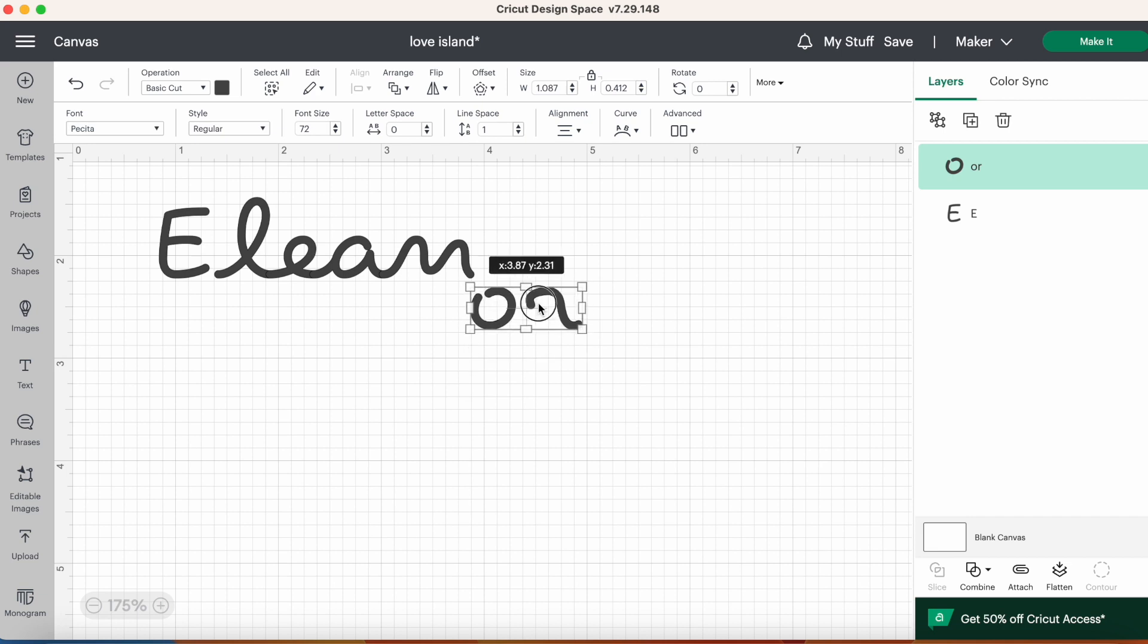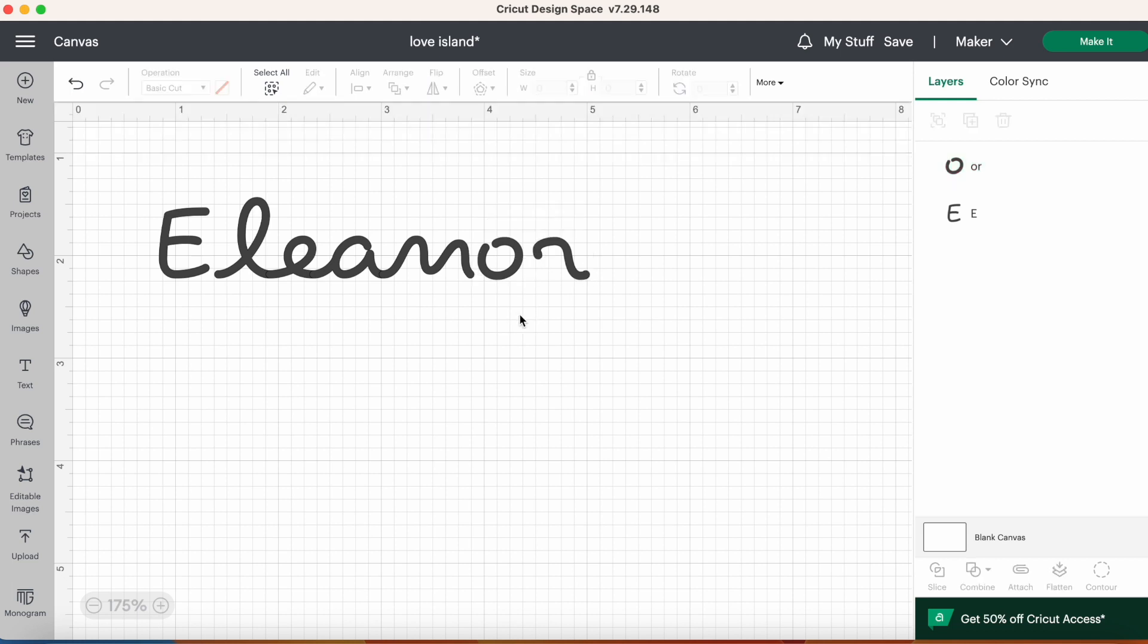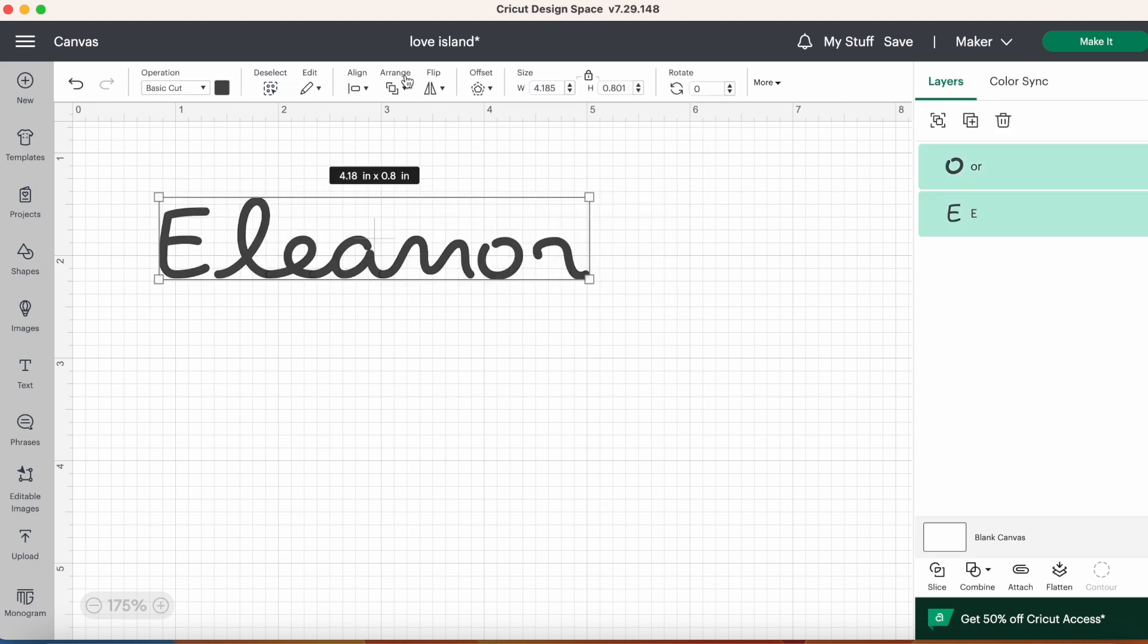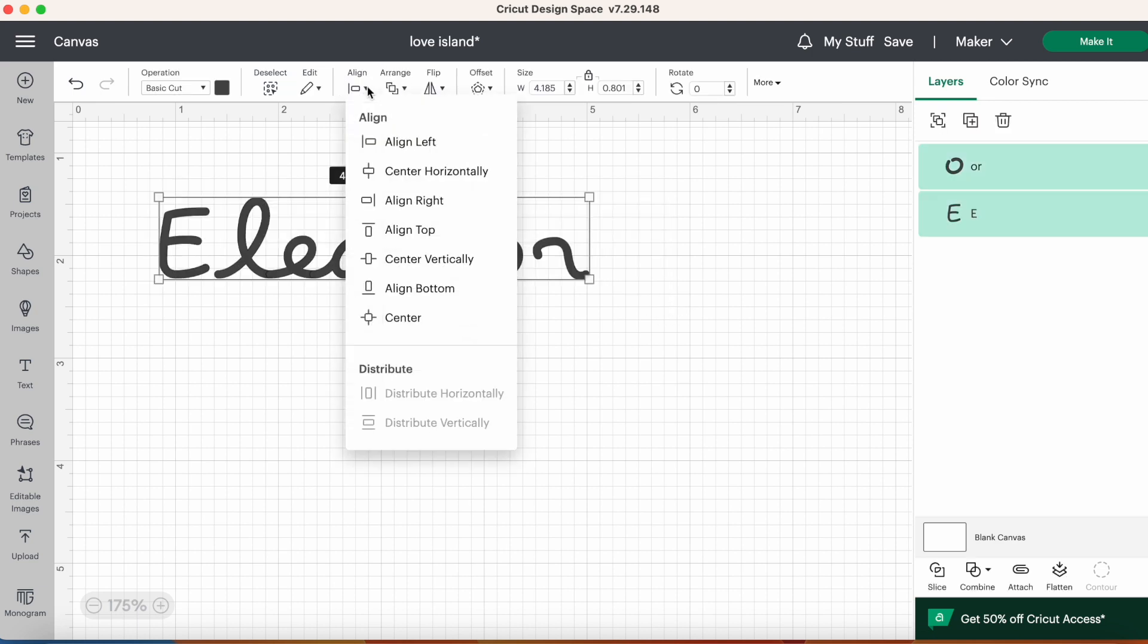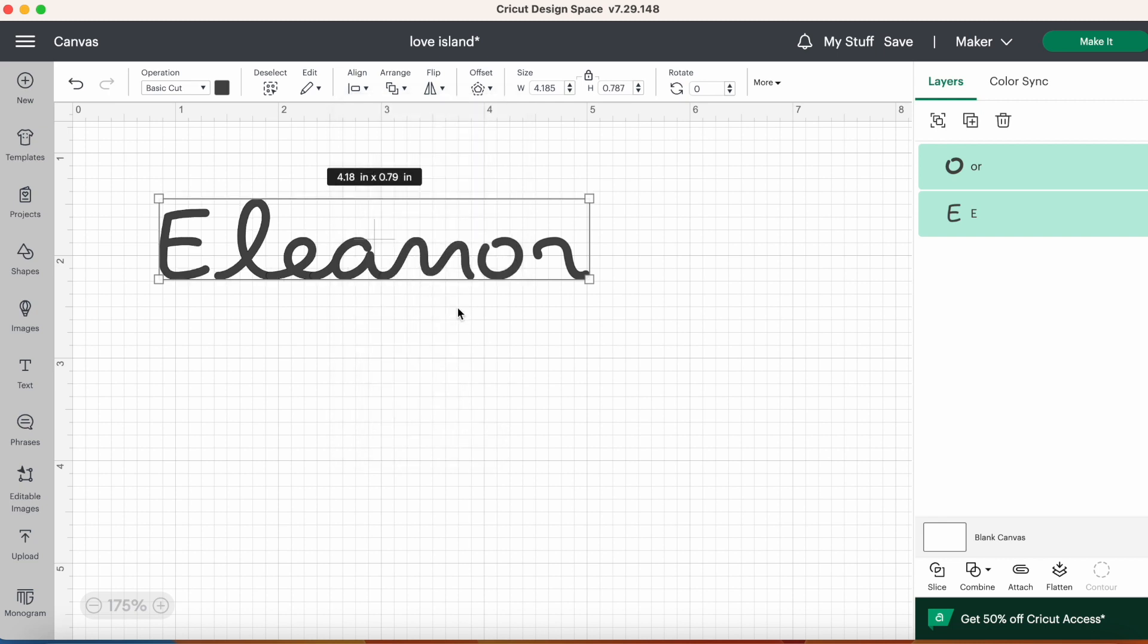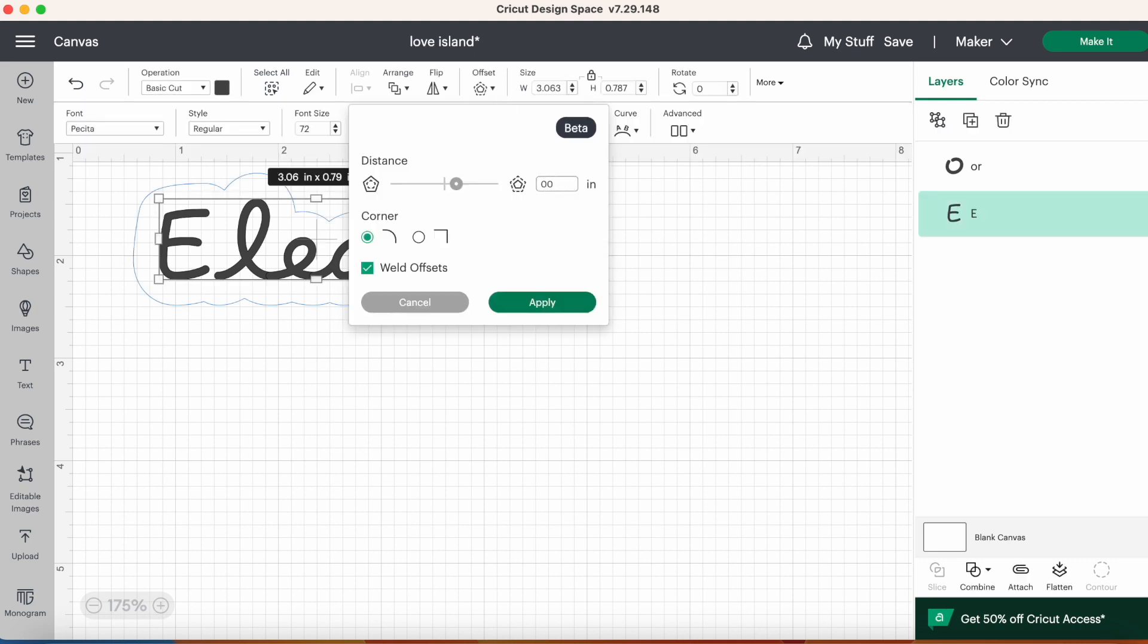Here I'm just lining them up and spacing them out slightly, and then I'm going to select everything and go up to my alignment and align them to the bottom just so that they're nice and straight. However, this font is quite thin and I want it to be quite thick, so I need to give them an offset and I'm going to offset them separately so that they don't weld together.